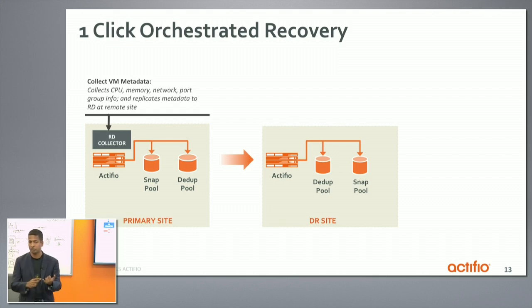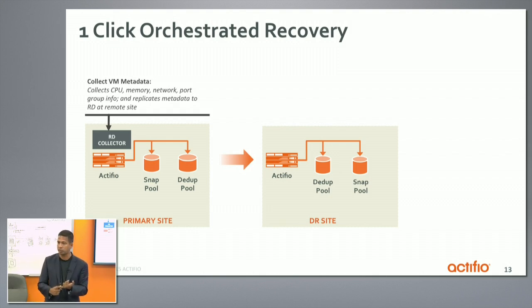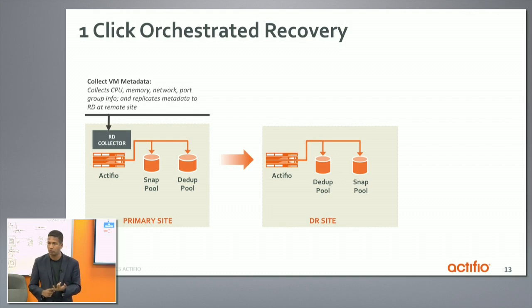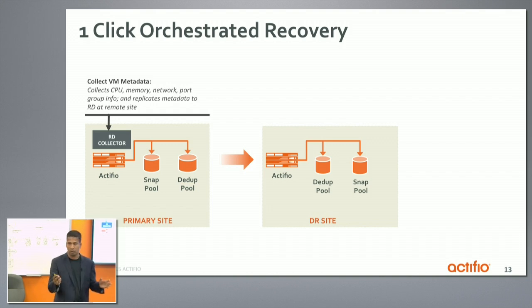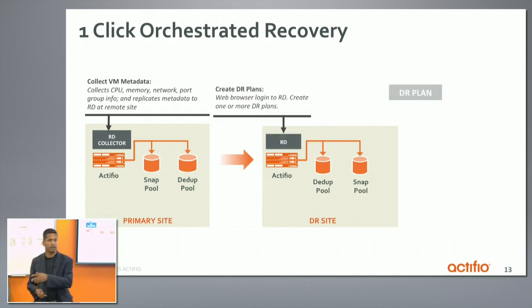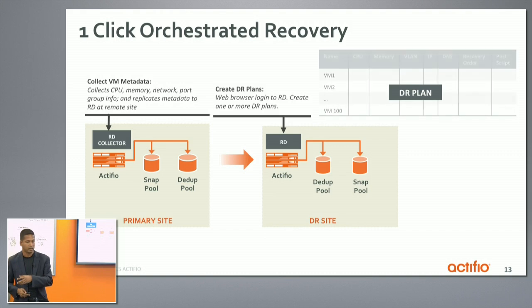The key metadata for any virtual machine is what's the vCPU, how much memory, what's the VLAN port group, how many vNICs, what's the IP address for each, and what's the DNS server — basic information. We collect that metadata for all of them and store it on the DR side.